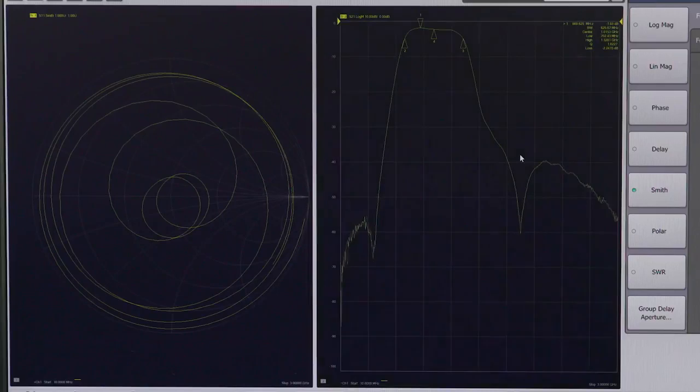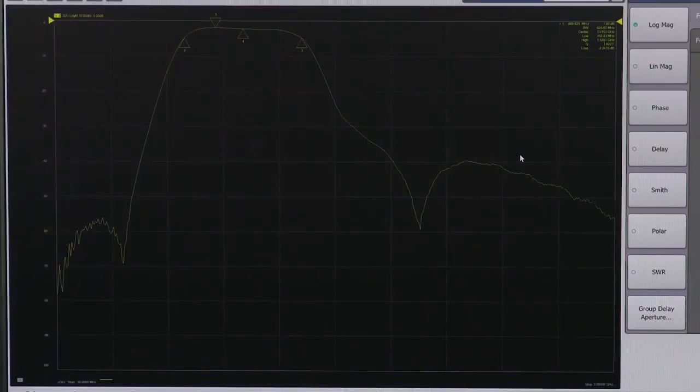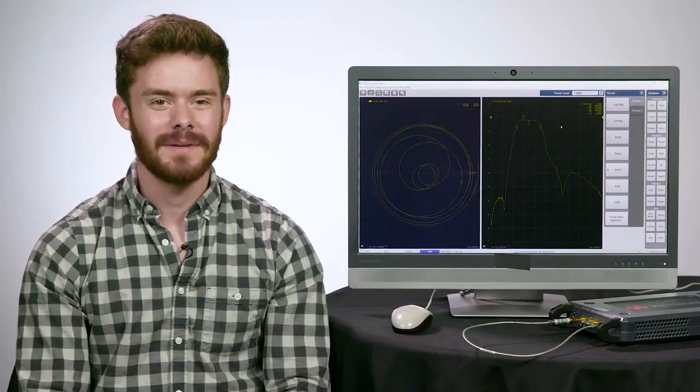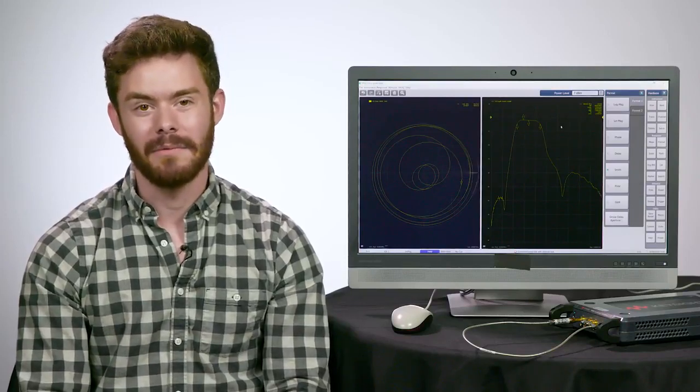Lastly, let's learn about how to speed up measurements and improve their accuracy. First, I'll double click on the S21 window to maximize that on screen. In order to speed up the measurements, we need to make the intermediate frequency bandwidth, or IF bandwidth, wider.